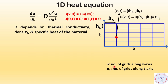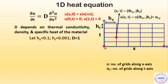Let N represent the number of grids along the x-axis and N_t the number of grids along the t-axis. Let step size along x-axis h_x equal 0.1, step size along time axis h_t equal 0.001, and for simplicity D equals 1. First consider the two boundary points. We know the value of u at these points because u(0, t) is 0 and u(1, t) is 0, so u(1,1) is 0 and u(N+1, 1) equals 0.